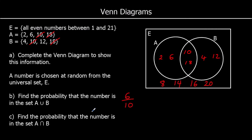The next question says find the probability the number is in the intersection of A and B — in both the A circle and the B circle. There are two numbers in both circles: 10 and 18. They're the only ones in both A and B, and there are 10 numbers in total. So the probability is 2 out of 10. Again, we could simplify, but we don't have to.